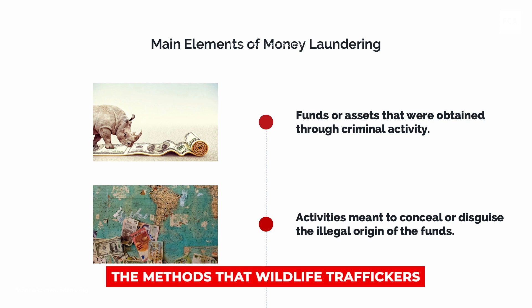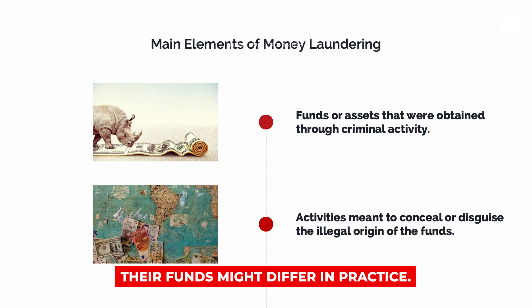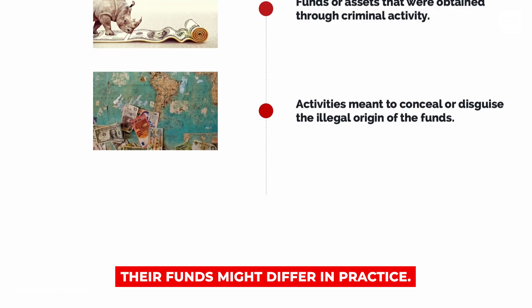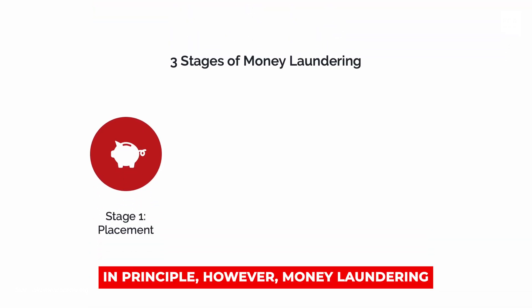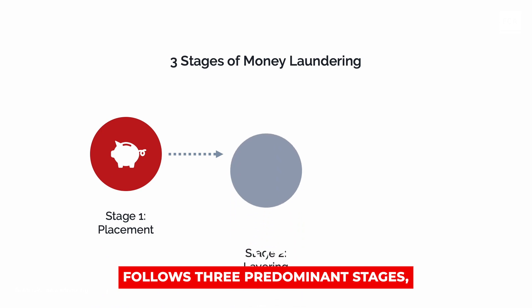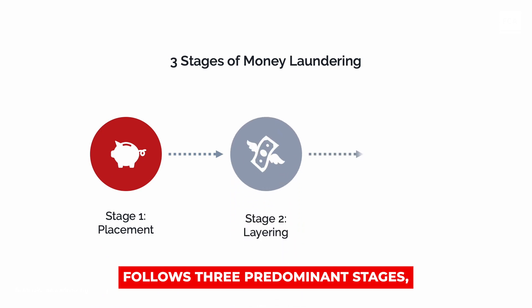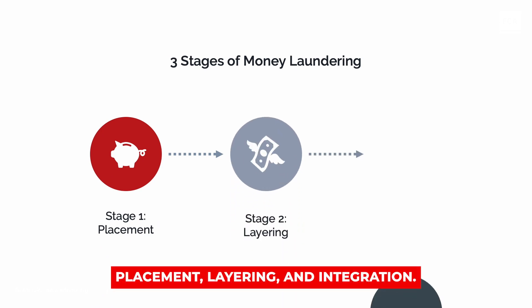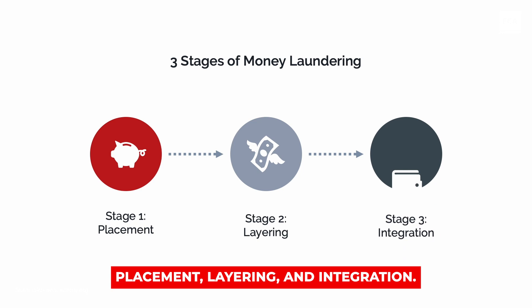The methods that wildlife traffickers and other criminals use to launder their funds might differ in practice. In principle, however, money laundering follows three predominant stages: placement, layering, and integration.